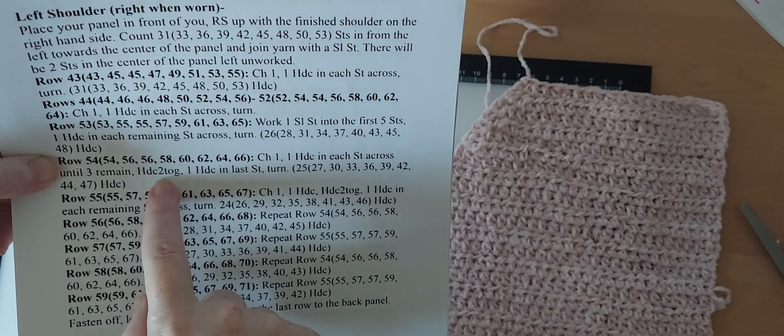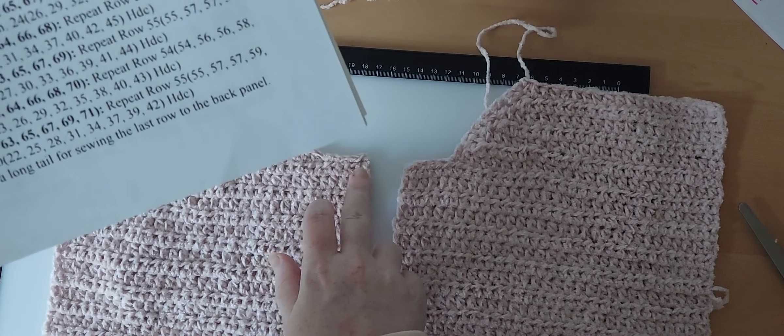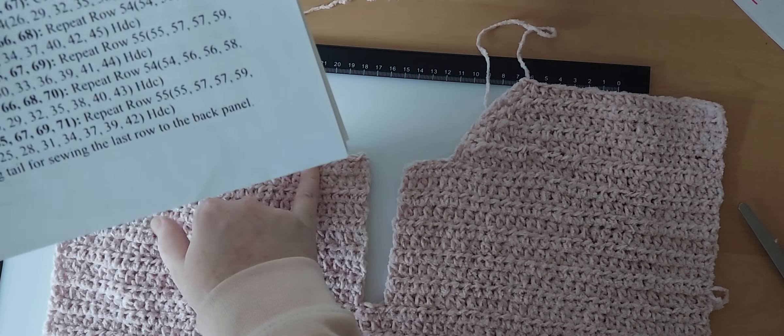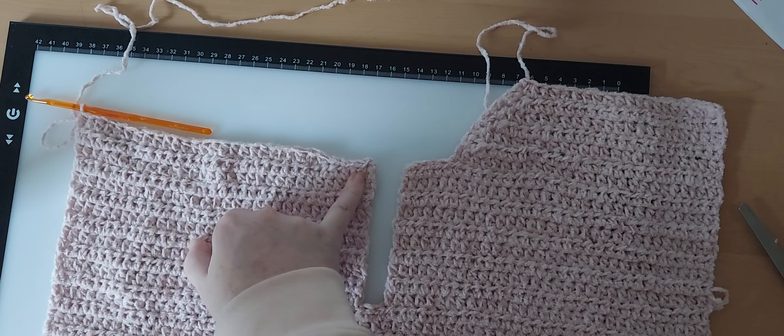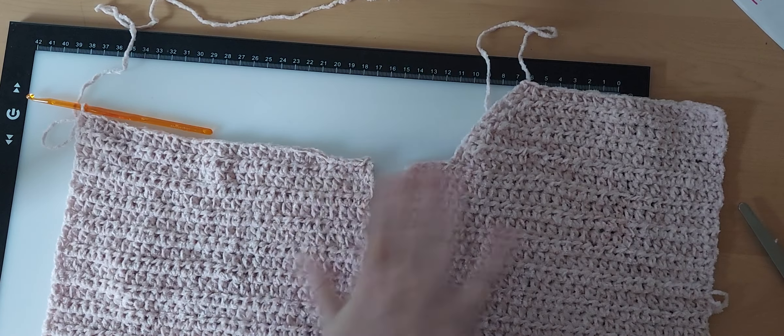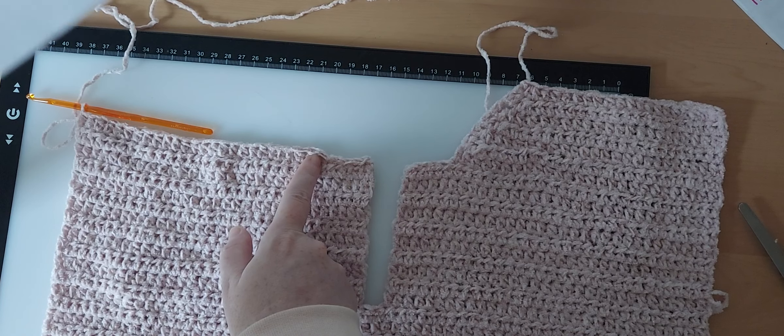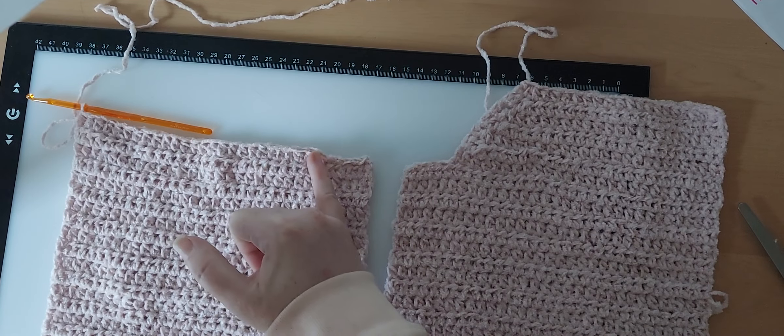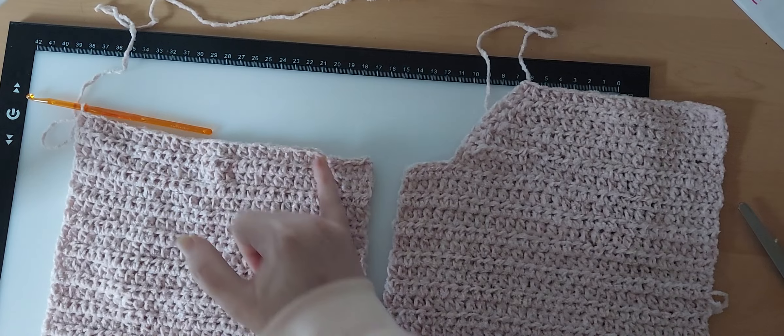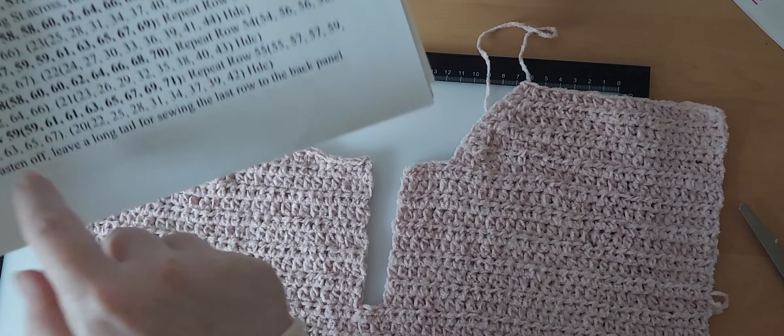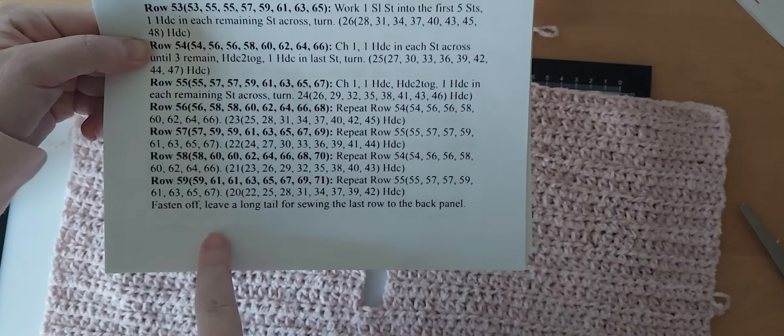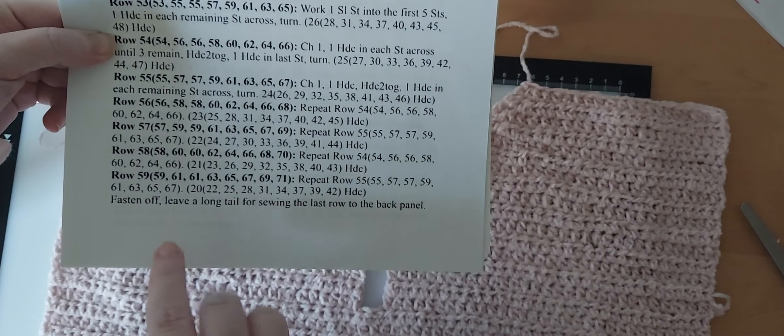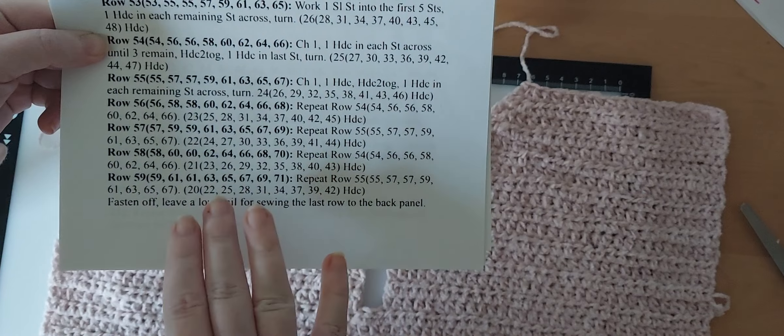You'll see that row 54, or whatever it is for you, you're going to chain one, turn, half double crochet across until 3 stitches remain, half double crochet two together, half double crochet in the last stitch, and you're only going to be going to here. You're not going to work back into your 5 slip stitches. That's done. You're only going to be going to here, and then it's going to make that decline like we did on this side.